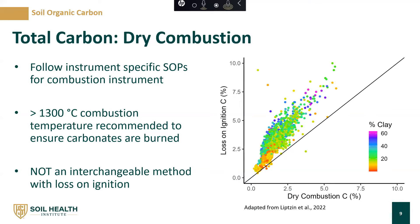For the measurement itself — dry combustion — we recommend following instrument-specific SOPs for the combustion instrument you're using. However, we do recommend combusting at a temperature above 1300 degrees C to ensure that all carbonates are burned off. I'd like to highlight that this method of dry combustion is not interchangeable with loss on ignition. The figure on the right shows the relationship between dry combustion percent C on the x-axis and loss on ignition percent C on the y-axis.